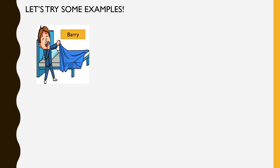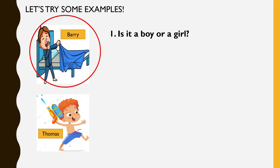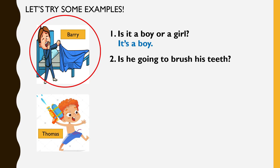Let's try more examples. Sekarang cikgu bagi dua gambar — seorang Barry, seorang nama dia Thomas. Antara dua gambar ini, cikgu pilih Barry. Cikgu sekarang akan cuba tanya soalan. Is it a boy or a girl? So it's a boy. Number two: Is he going to brush his teeth? Adakah Barry sedang menggosok gigi? Tidak. Dia mau tidur kan? So maksudnya soalan itu salah. No, he isn't. Number three: Is he going to go to bed? Adakah dia mau tidur sudah? Sudah menguap. Yes, he is.